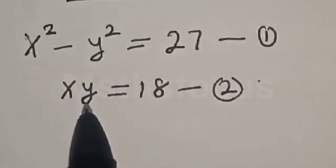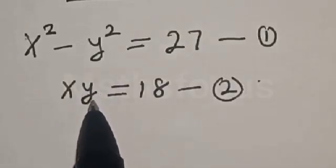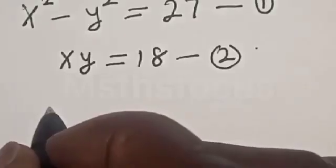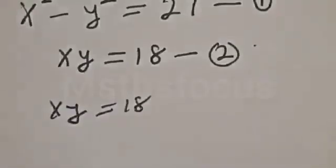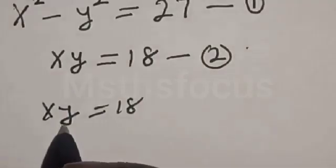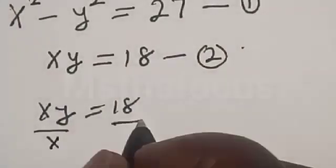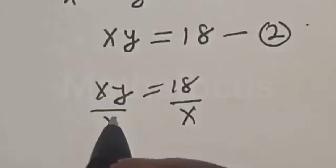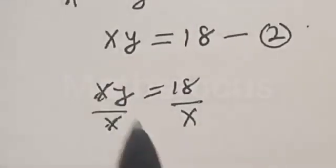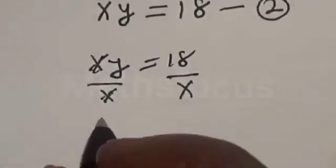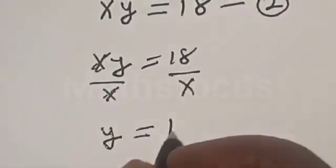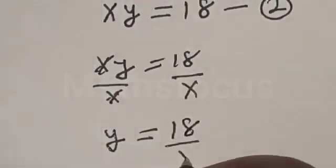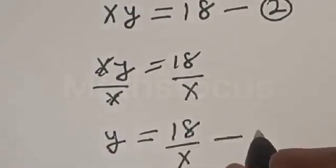From equation 2, let's make y the subject of the formula. x y is equal to 18. Now let's divide both sides by x — dividing by x will cancel x. So y is equal to 18 divided by x. Let's call this equation 3.